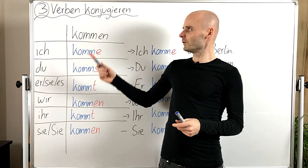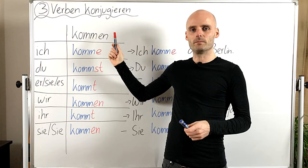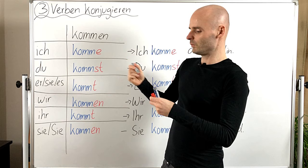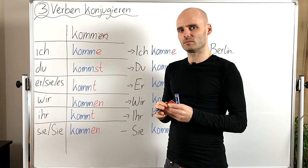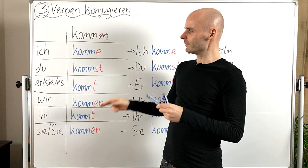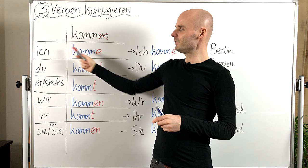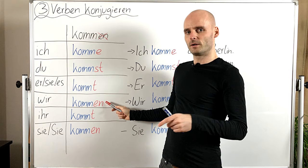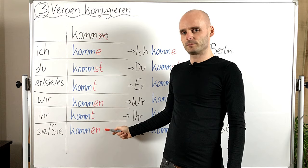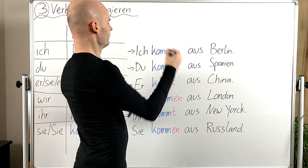For now we focus on the endings. Here we have the verb 'kommen' — das Verb kommen, 'to come'. What we basically do is we get rid of the '-en', and then we are left with the stem — the core of the verb. Then we just add the endings. For 'ich' it's an 'e', so 'ich komme'. Du kommst. Er, sie, es kommt. Wir kommen. Ihr kommt. Und sie kommen.